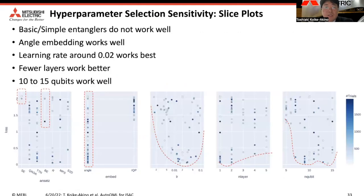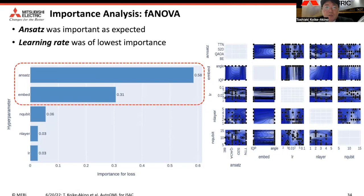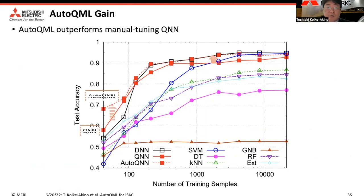When we examine sensitivity of hyperparameter selection, some ANSATZs show really poor performance. AutoML automatically tunes hyperparameters such as learning rate, number of layers, and number of qubits. From a functional ANOVA importance analysis, we found that ANSATZ choice is the most important factor determining test accuracy. Usually learning rate is important for deep neural networks, but in our case it showed the lowest importance. Using AutoQML, we showed performance can be improved over manual-tuning QNN and achieves better than state-of-the-art deep neural network performance.